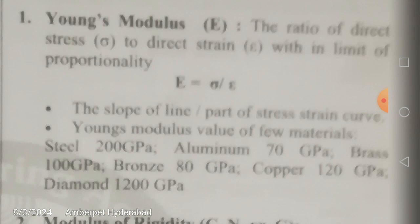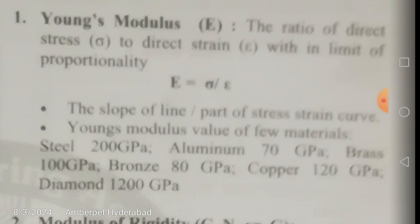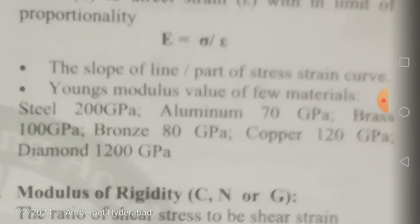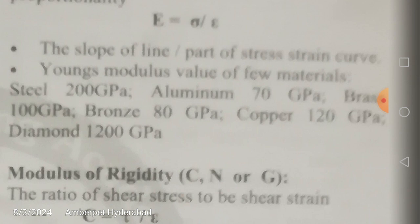Young's modulus: the ratio of direct stress sigma to direct strain epsilon within the limit of proportionality is called Young's modulus. It is denoted by capital E. E is equal to sigma by epsilon, where sigma is the stress and epsilon is the strain. Young's modulus is given by the slope of the stress-strain curve, with stress on the y-axis and strain on the x-axis.